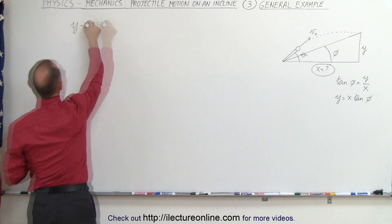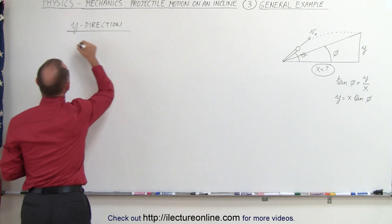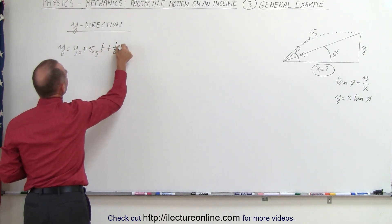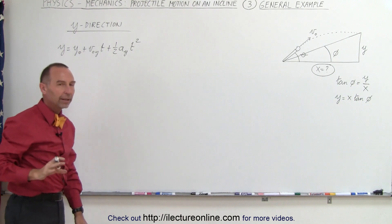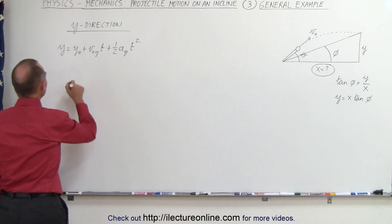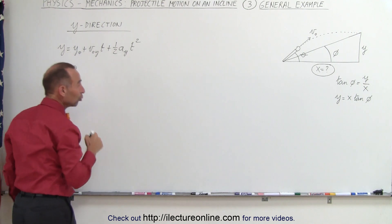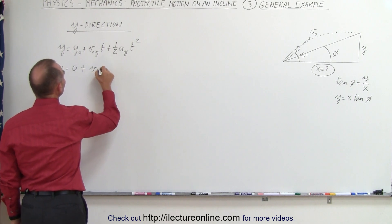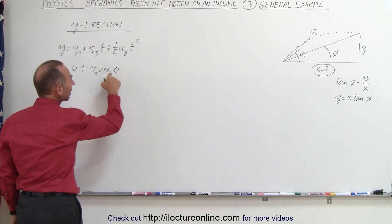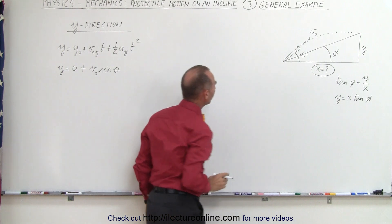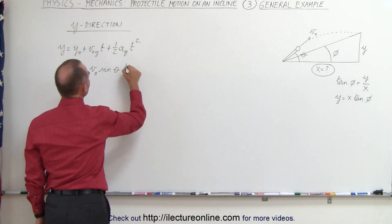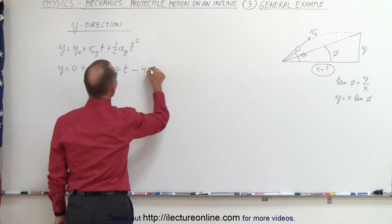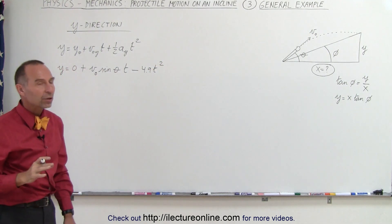Starting with the y direction, we can write that y equals y-naught plus v-naught in the y direction times time plus one-half a in the y direction times time squared. Plugging in our parameters: y equals zero, since the initial height is zero, plus v-initial times the sine of theta times t, minus 4.9 t squared. That's as far as we can go at this moment.